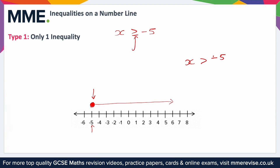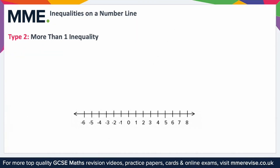A second type of inequality is where we have a bound at either end. For example: minus 3 is less than or equal to x, and x is less than 5. This includes the values minus 3, minus 2, minus 1, 0, 1, 2, 3, and 4 — not including 5, because there's no line underneath that symbol, whereas we do include minus 3.